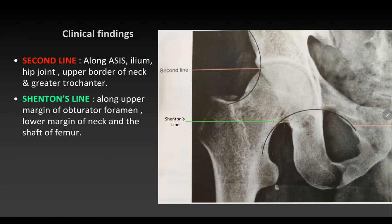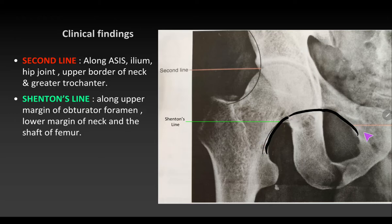In clinical practice, an important line called Shenton's line is used. It is drawn by extending a line from the upper margin of the obturator foramen and a line along the lower margin of the neck of femur; when joined they form a smooth arc. In cases of dislocation of the hip, this line will be disrupted — that is the importance of Shenton's line.